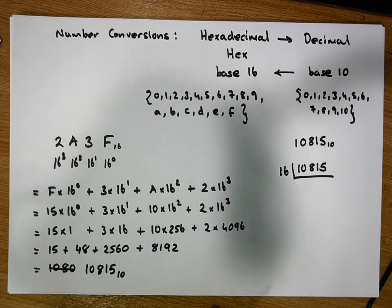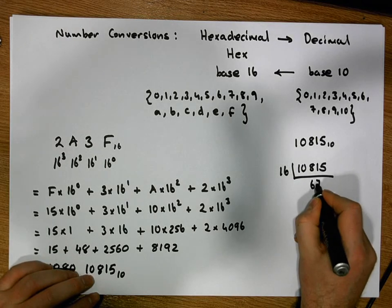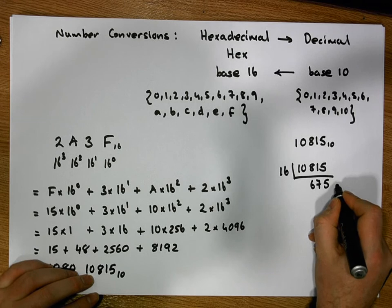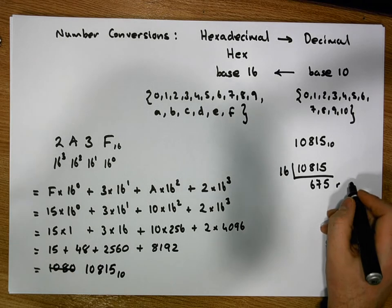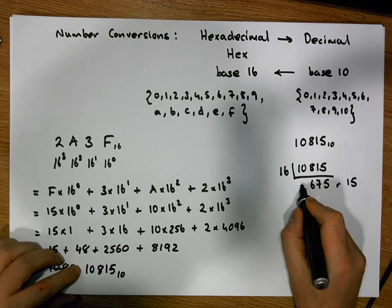So we have 10,815 divided by 16 gives us 675 times with a remainder of 15. Now how many times does 16 go into 675?